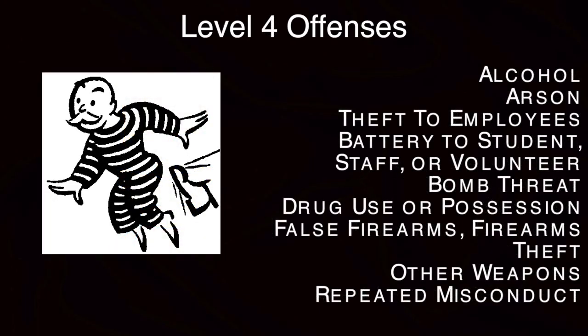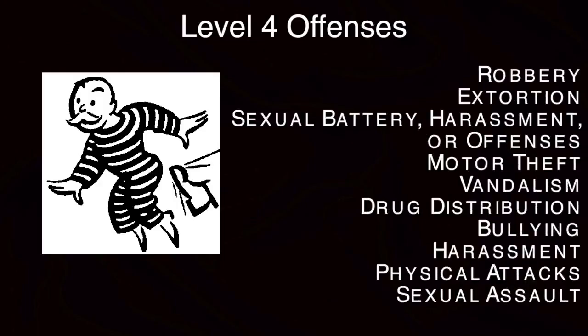Good morning Mustangs. We will now discuss our level 4 offenses. Our level 4 infractions include alcohol, arson, theft from employees, battery of an employee or student or volunteer, bomb threats, drug use or possession, false fire alarms, firearms, inciting, leading, and participating, larceny or theft of $300 or more, and other weapons.